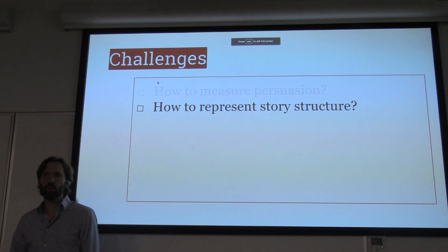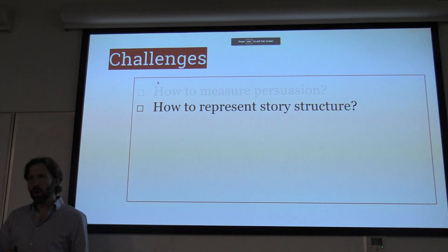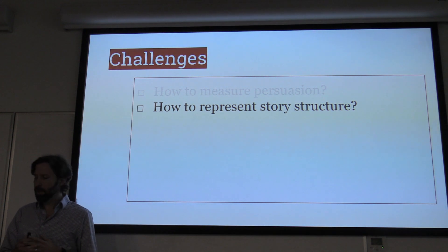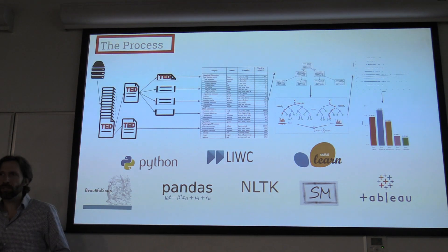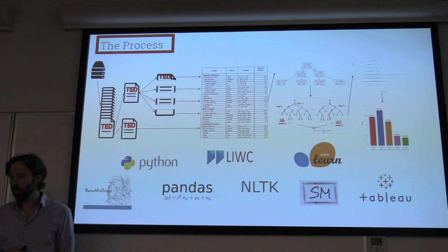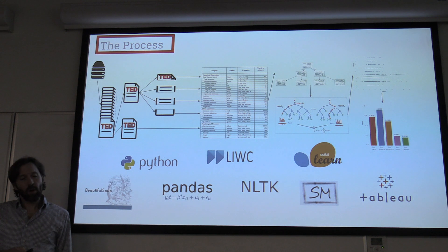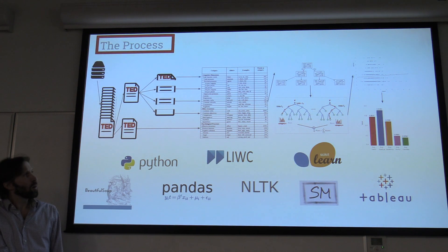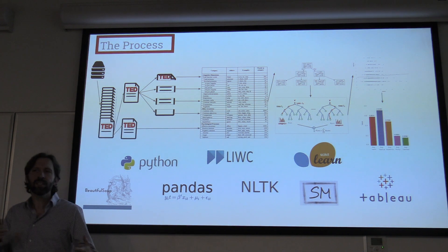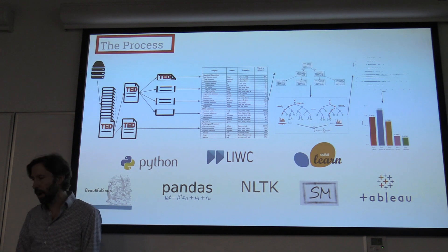But how do we represent story structure? We have the transcript, and we can break it into four pieces. We divided the transcript into four quarters — quarter one, quarter two, quarter three, quarter four — analyzed all the words by category, and put them through decision trees, gradient-boosted regressors, and linear regression to come up with a linguistic signature of a persuasive talk and a linguistic signature of an inspiring talk.